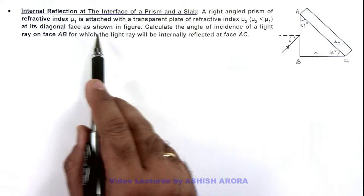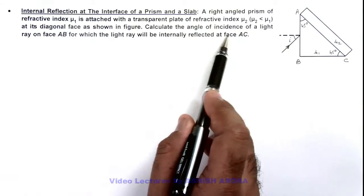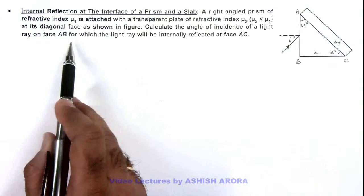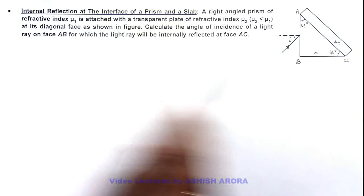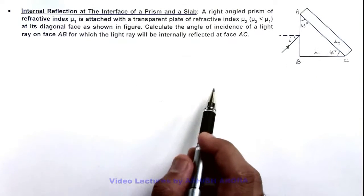At the diagonal face of the prism, we are required to calculate the angle of incidence of a light ray on face AB for which the light will be internally reflected on face AC.